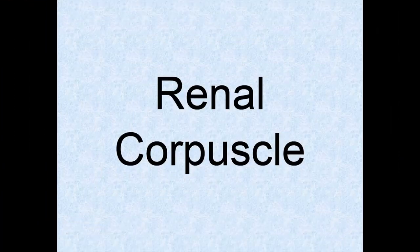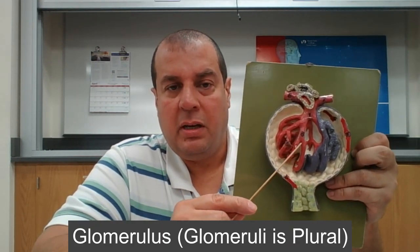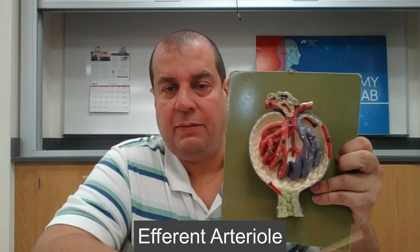Filtration of blood plasma occurs at the renal corpuscle. Blood pressure forces water and solutes across the walls of the glomerular epithelium and into the capsular space; only solutes small enough to pass the filtration membrane are carried by water into the capsular space. Blood comes in via the afferent arteriole, filtration happens at the glomerulus, and blood continues out the efferent arteriole.